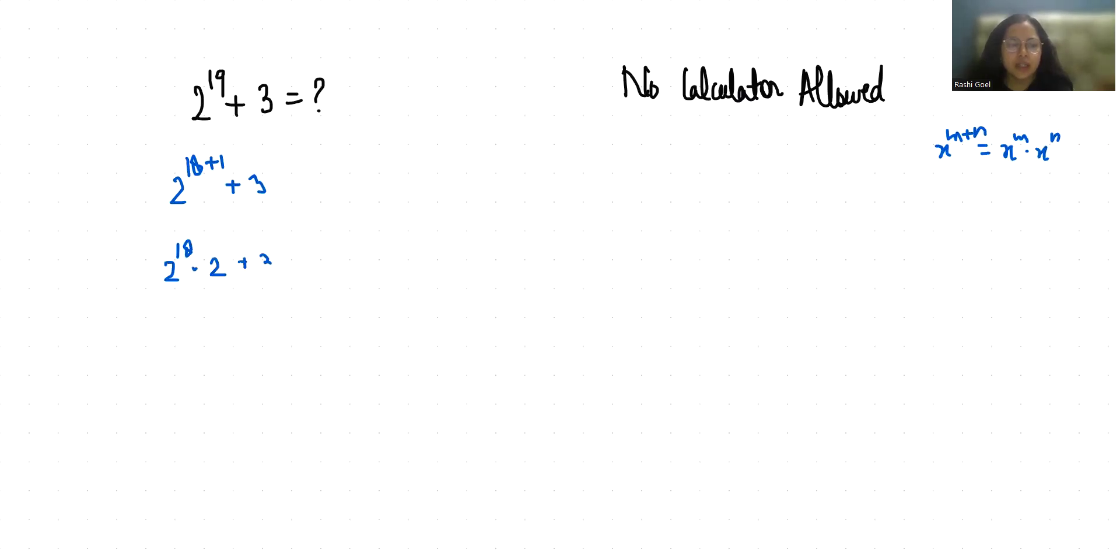So 2 power 18 we can write as 2 power 9 times 2. According to exponent rule x power mn we can write it as x power m power n. So this I can write it as 2 power 9 power 2 times 2 plus 3. 2 power 9 is 512.